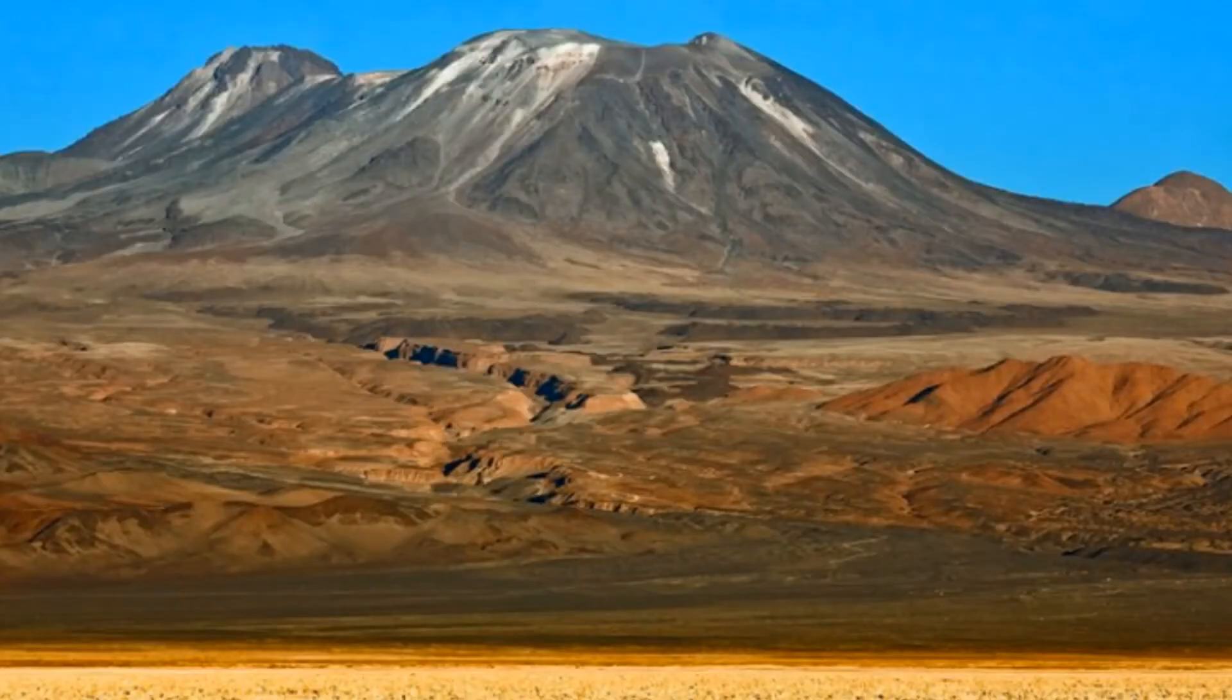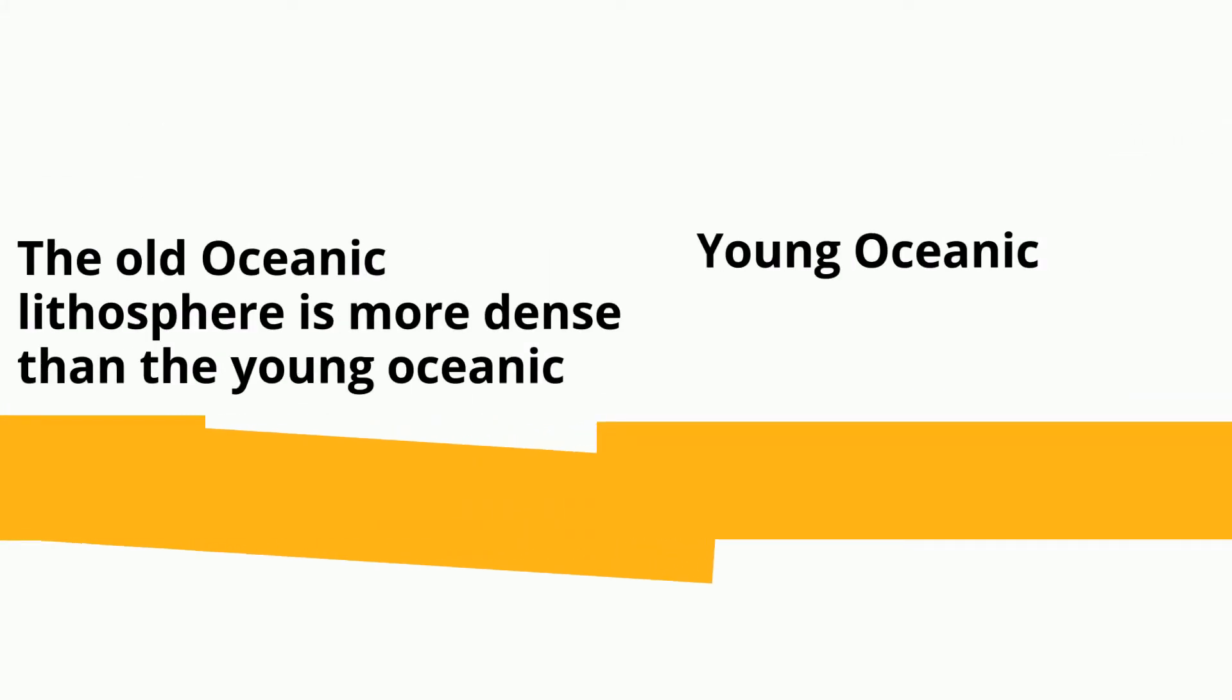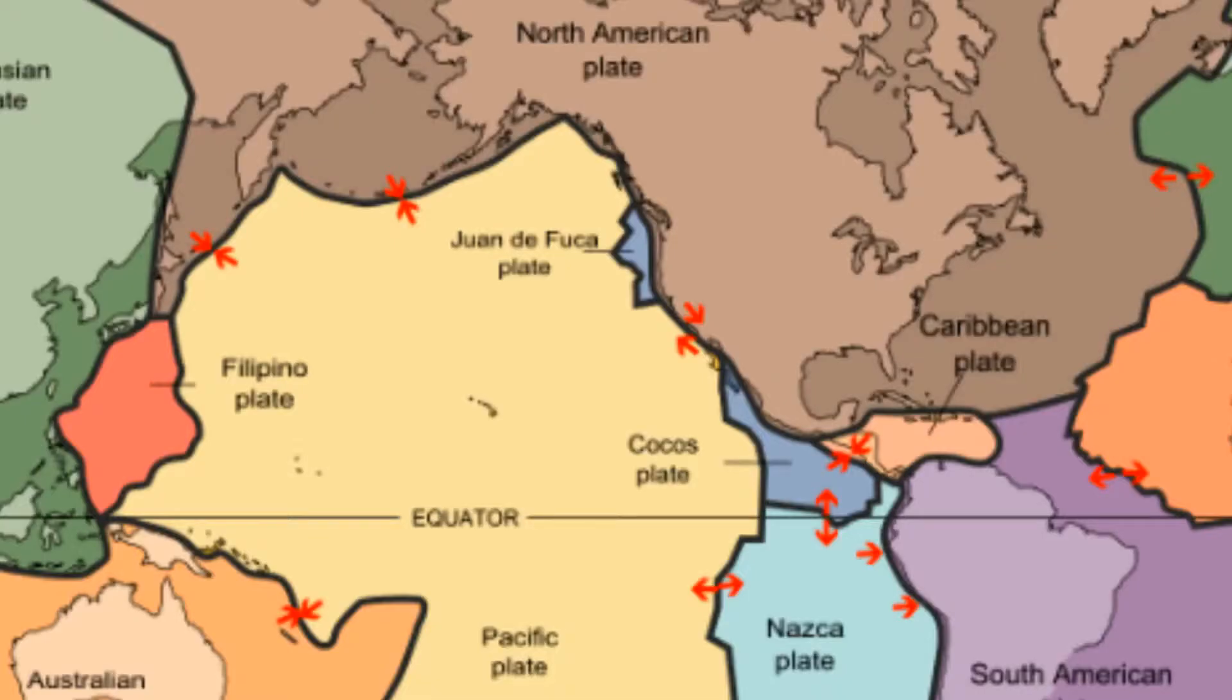When oceanic lithosphere collides with oceanic lithosphere, a similar event occurs. The older oceanic crust is denser than the younger crust and subducts underneath. As it subducts, magma begins to rise to the surface and this can create volcanic island arcs. An example is the portion of the North American plate covered with ocean subducts underneath the Pacific Oceanic Plate. The Aleutian Islands have been created from this collision.